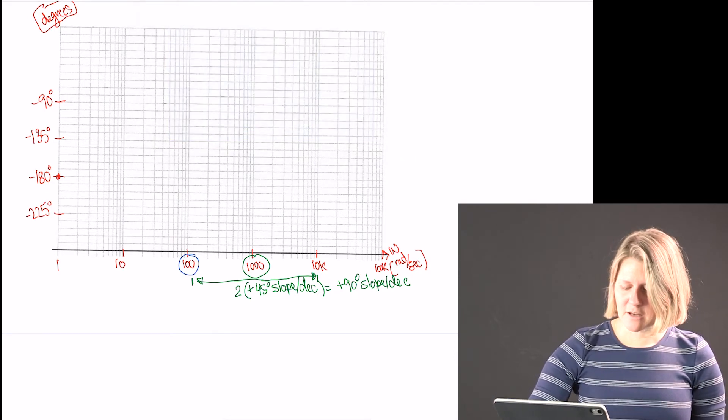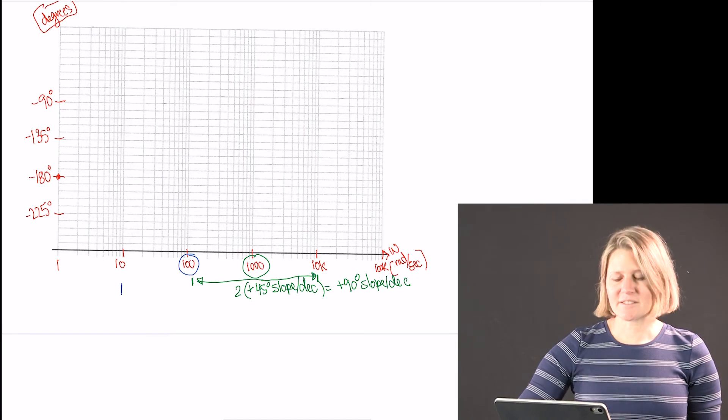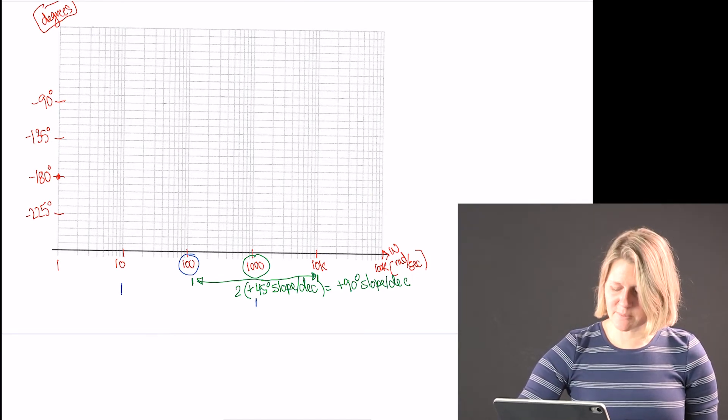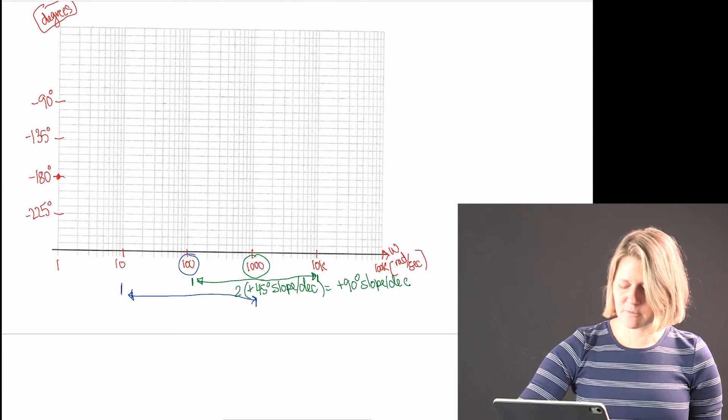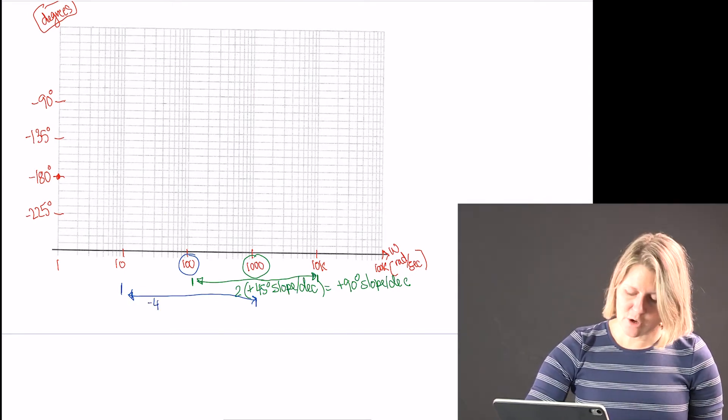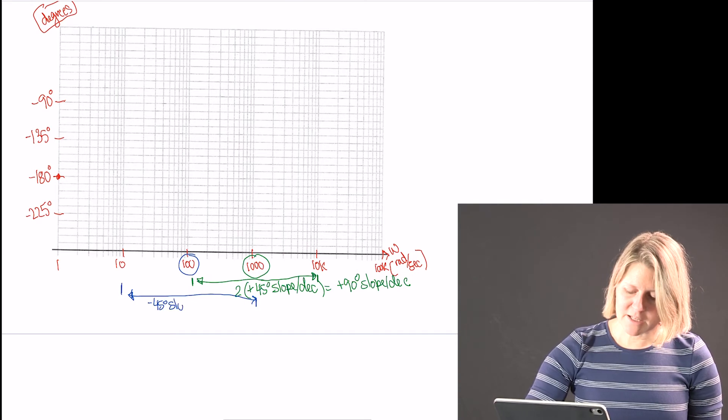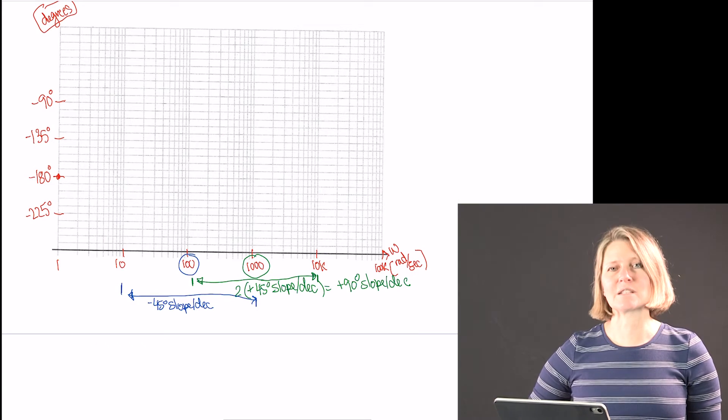So for 100, 100 divided by 10 is 10, 100 times 10 is 1000. And so this is going to be my region is 10 to 1000. The slope is going to be a minus 45 degree per decade slope during that region because it is a pole.